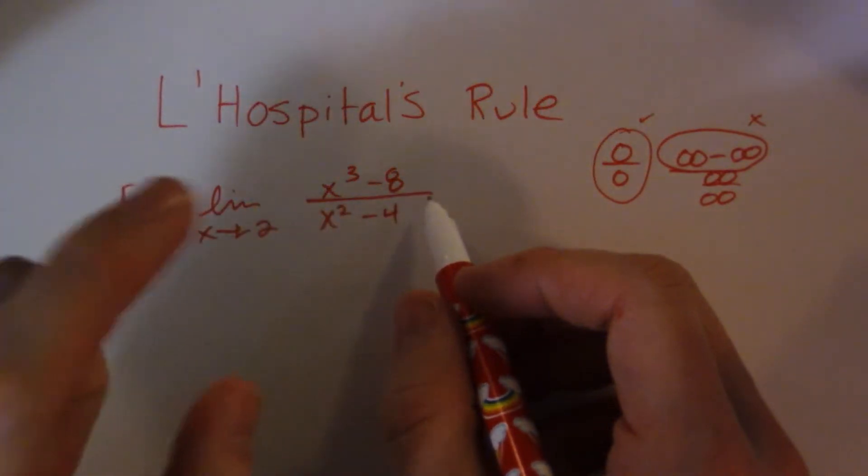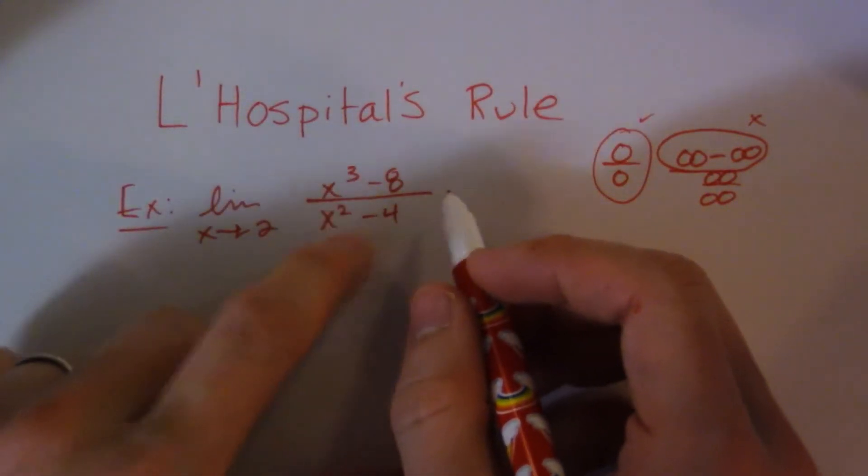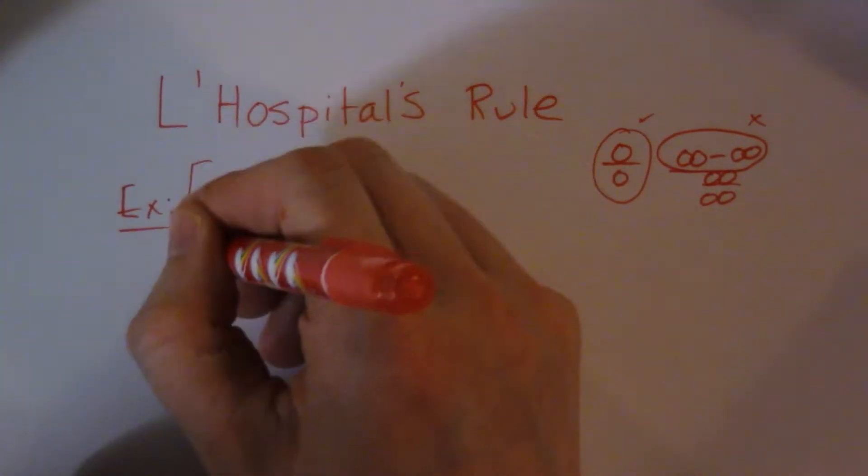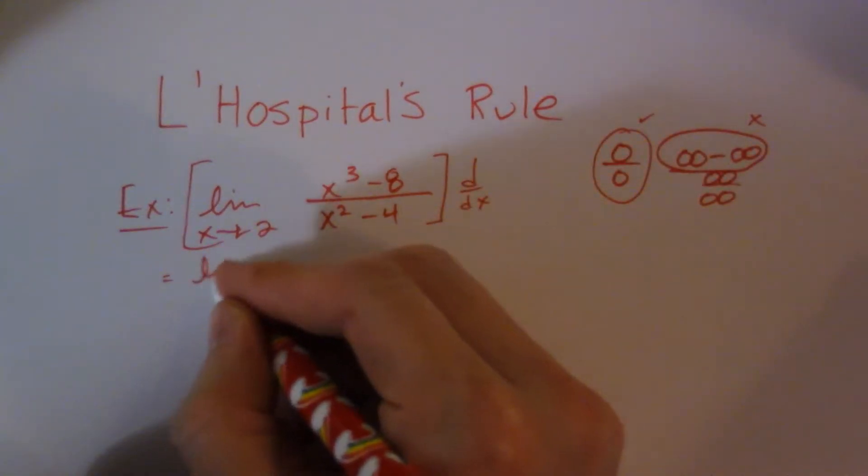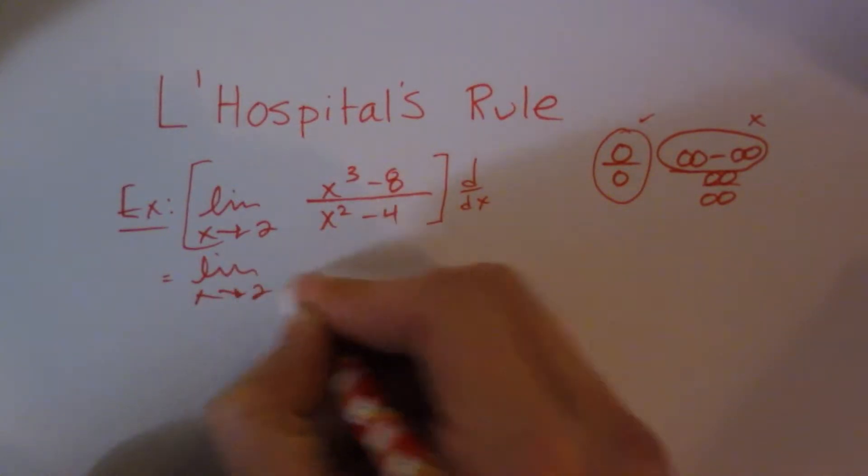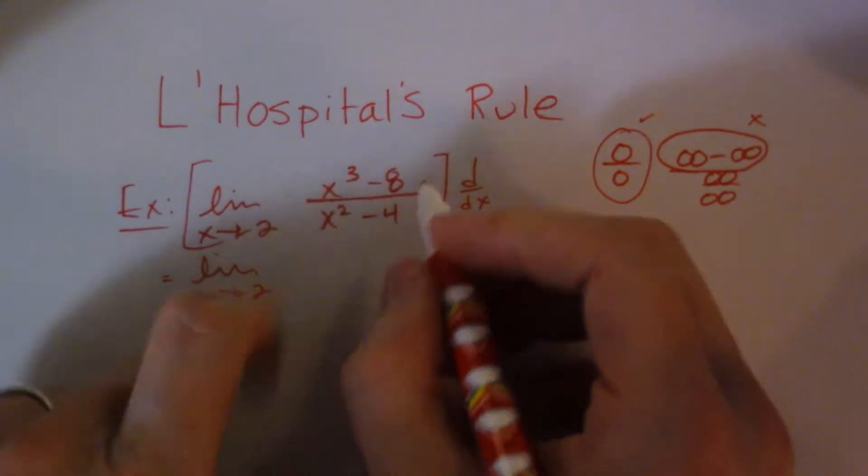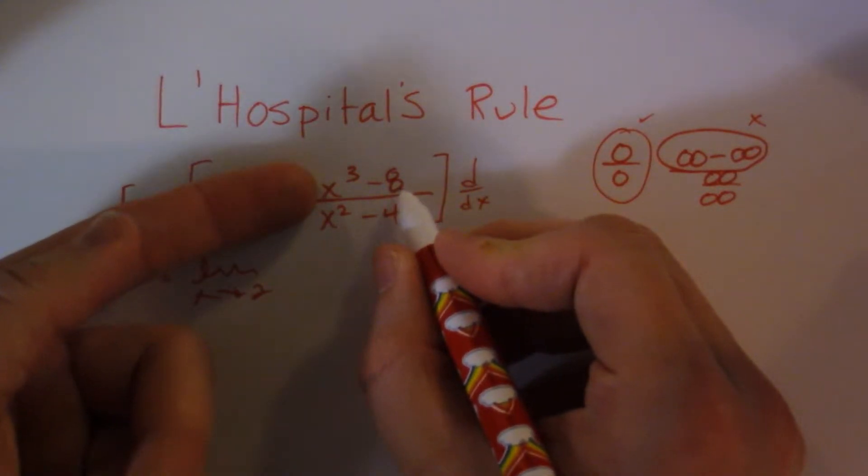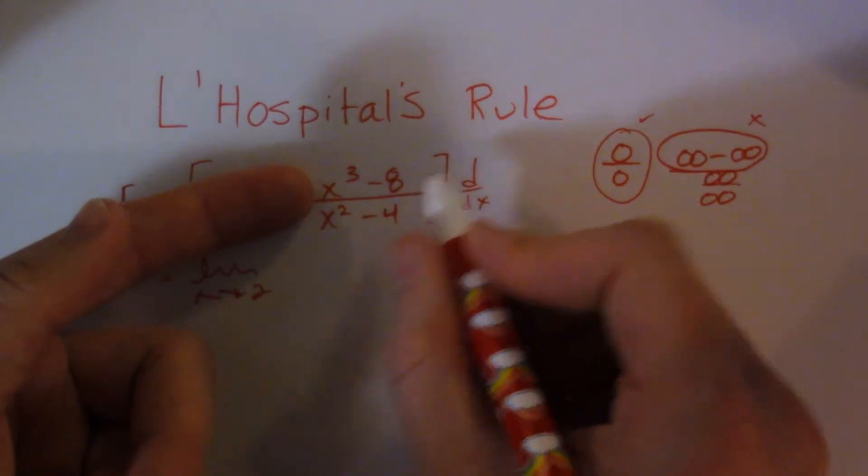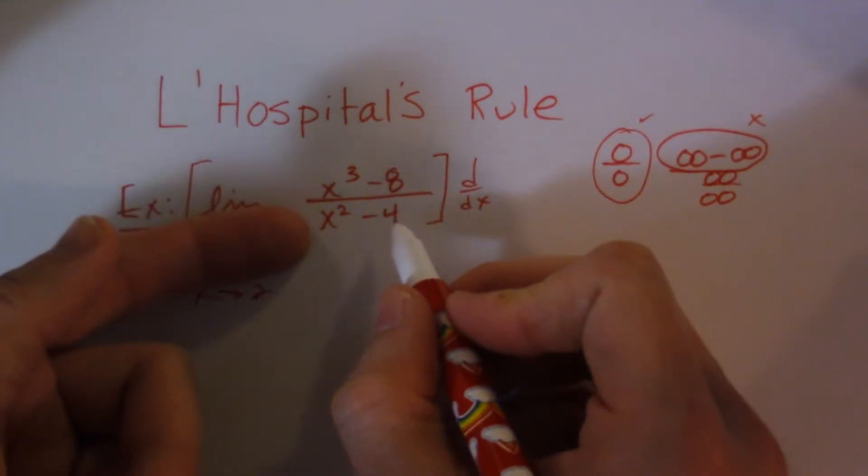The thing about L'Hospital's Rule, it's really simple. All you have to do is take the derivative of this guy, so we just take the derivative of the top. If I was going to do this, I have the factors, so that's a difference of cubes, which you may not remember the formula for. I got two videos on it. And this is difference of squares. You got to remember those factoring techniques, most people probably will be able to do that, but it's just so much easier to do it this way.